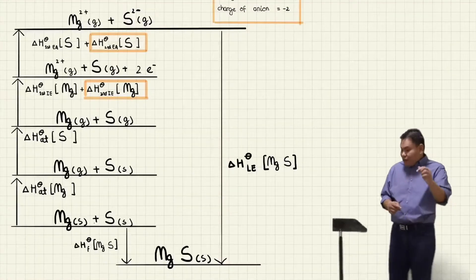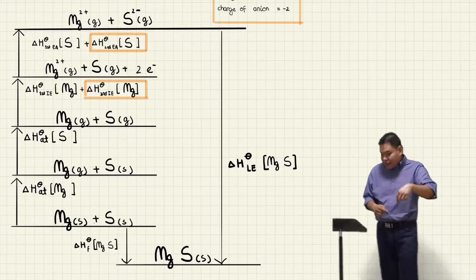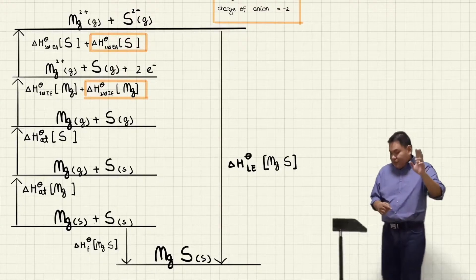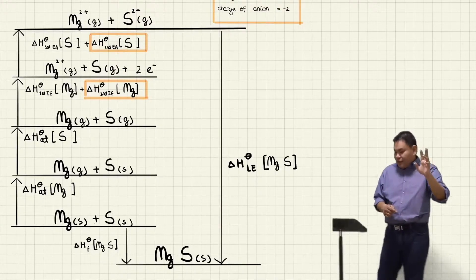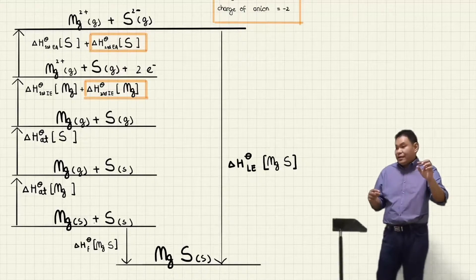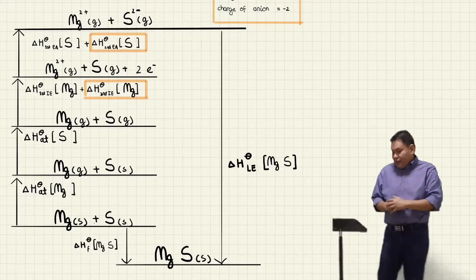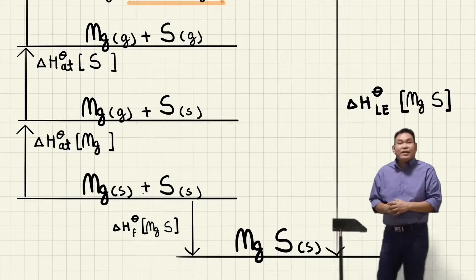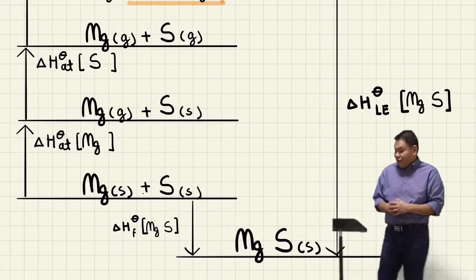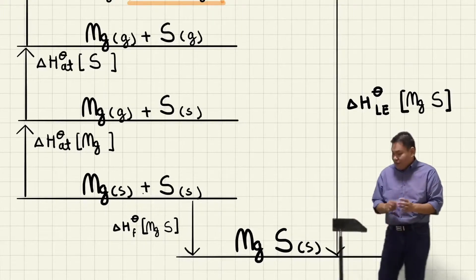Don't forget to complete the cycle — from the elements in standard state to the ionic compound in solid state, which is the formation of magnesium sulfide. That's how you do Example 2.